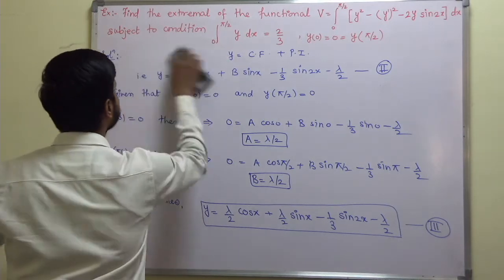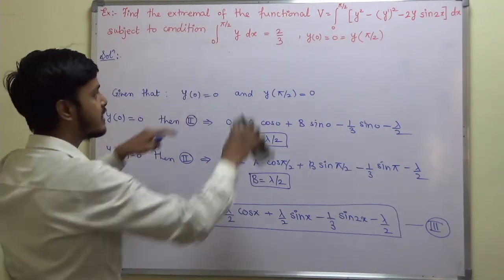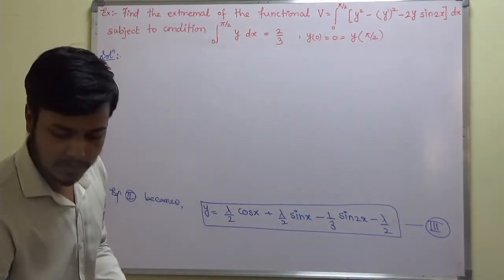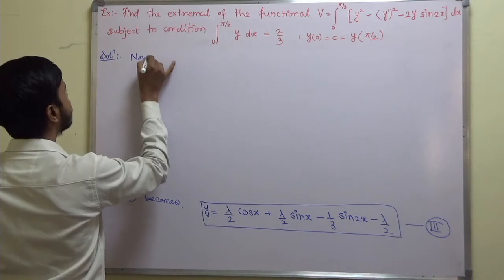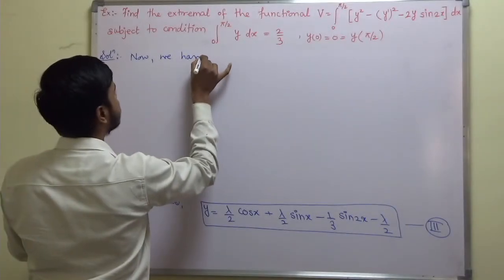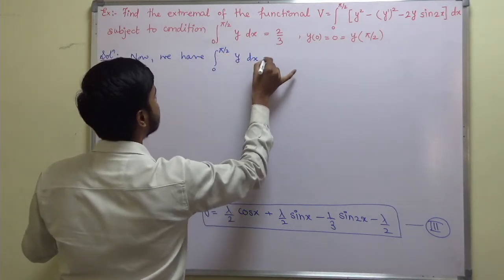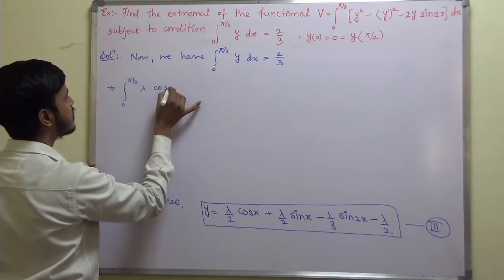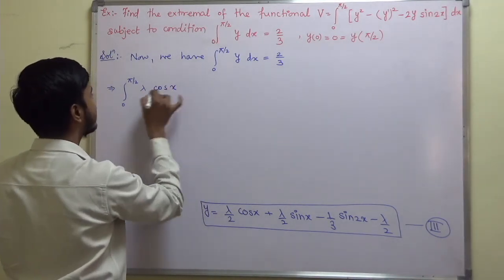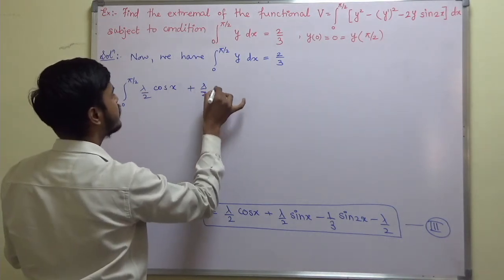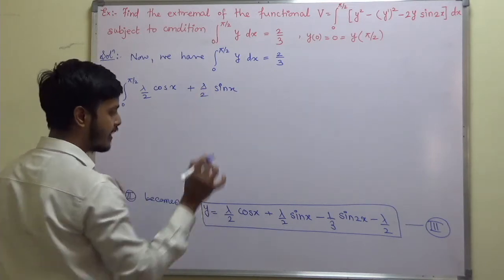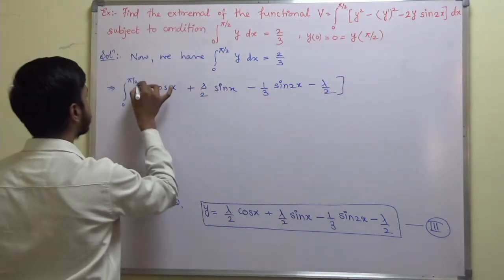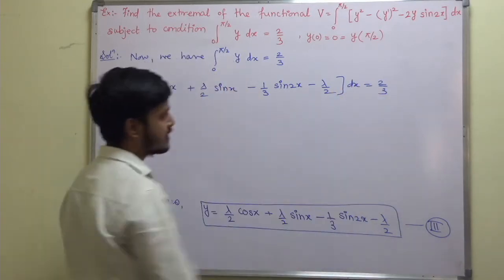To get the value of λ, use the isoperimetric constraint: the integral from 0 to π/2 of y dx equals 2/3. Substituting equation 3: the integral from 0 to π/2 of [(λ/2)cos x + (λ/2)sin x − (1/3)sin(2x) − λ/2] dx equals 2/3.